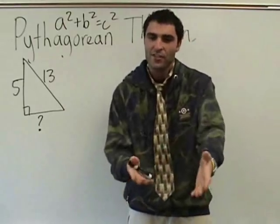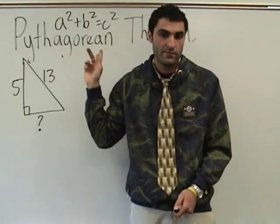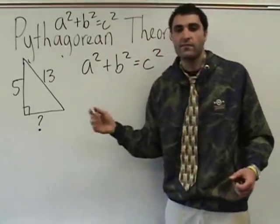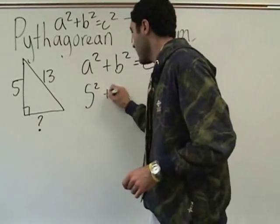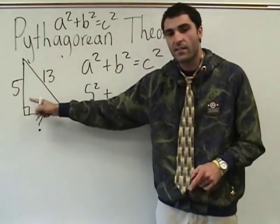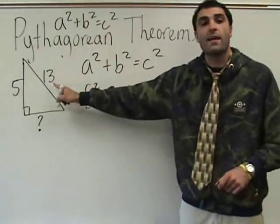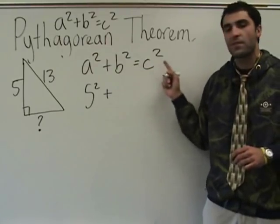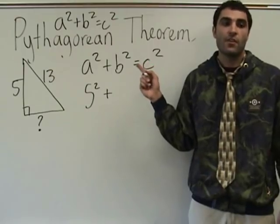What is the equation? If you don't know, how do we start it? Maybe we can start with the formula. A squared plus B squared equals C squared. So we have three numbers. What's going to be A? Five. Five squared. What's going to be B? Thirteen. A big mistake that people make is they don't know where to put the thirteen. Thirteen is the hypotenuse, and in our equation that's C. So we have to make thirteen C in this case.